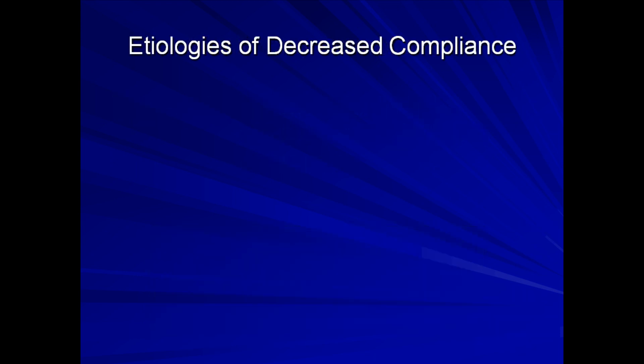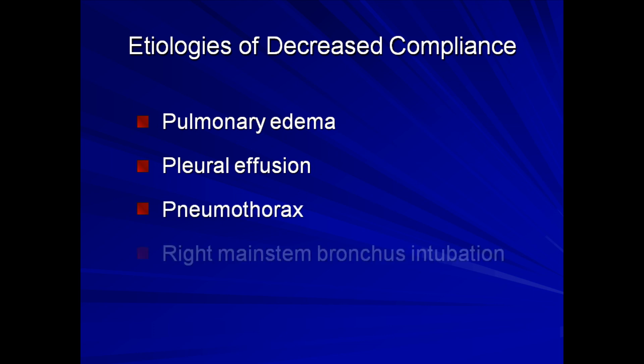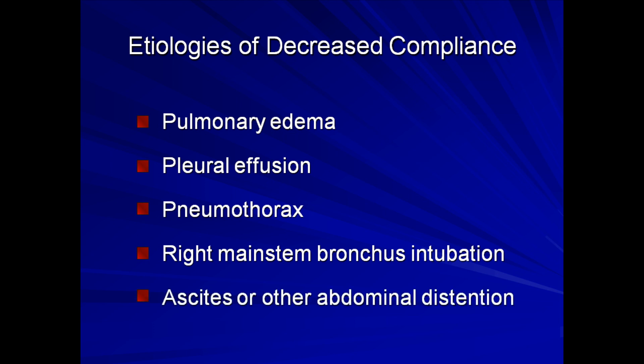Etiologies of decreased compliance of the respiratory system include pulmonary edema, pleural effusion, pneumothorax, positioning of the endotracheal tube in the right main stem bronchus instead of the trachea, and ascites or any form of marked abdominal distension.